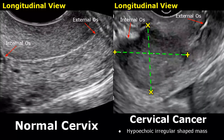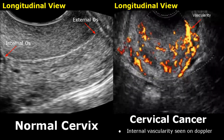Cervical cancer is also difficult to see on ultrasound and sonography is not reliable for it. If the mass is large enough, we may see an irregularly shaped hypoechoic mass in the cervix. On Doppler, this mass will have internal vascularity. Here, power Doppler is used and we can see many areas of vascularity.